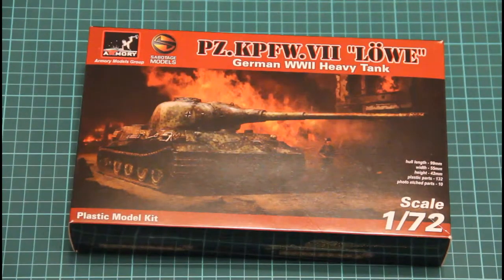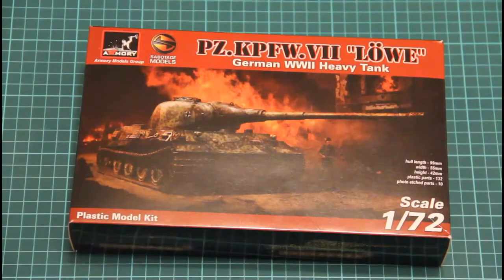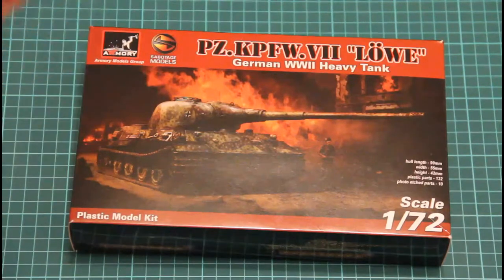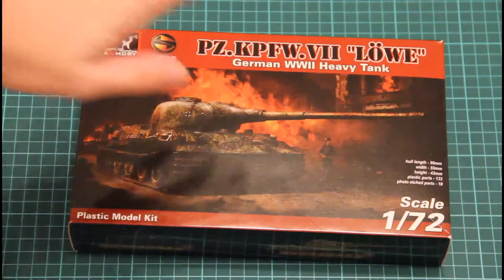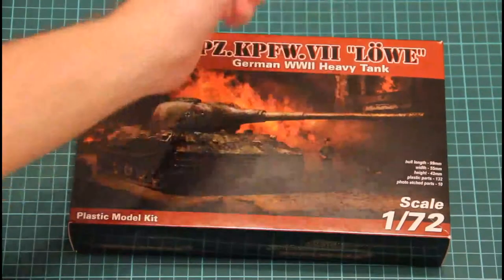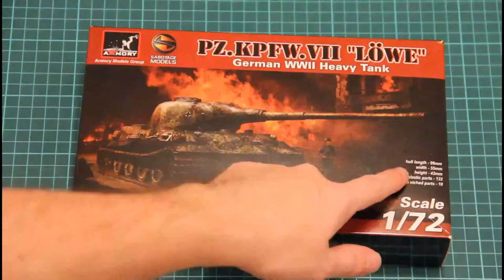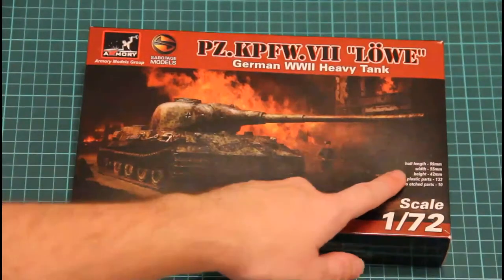So here we have a plastic model kit in 1:72 scale. As you can see, we have not that big a box. Here you can see in comparison with my hands, and also we have here written dimensions of the assembled model.